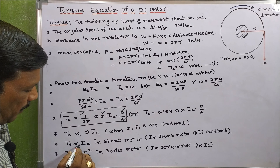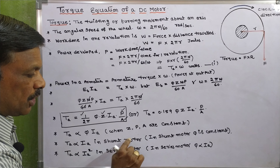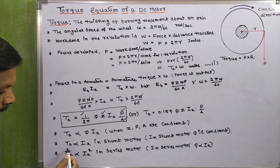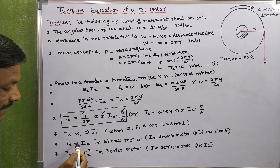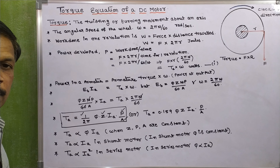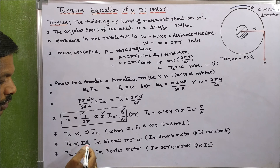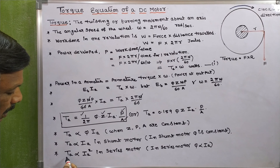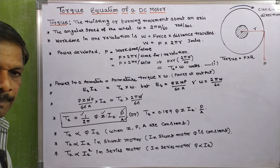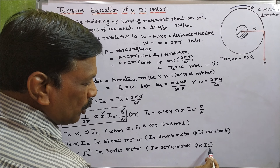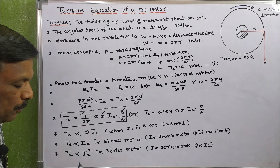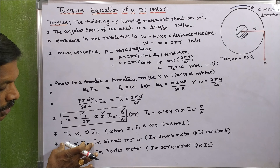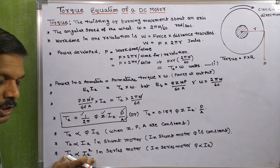Torque is proportional to I_A in a shunt motor. The general torque equation is T proportional to φ·I_A, but in a shunt motor φ is constant, so T_A is proportional to I_A. In a series motor, torque is proportional to I_A squared, because in a series motor φ is proportional to I_A, so torque is proportional to I_A × I_A = I_A².